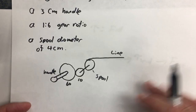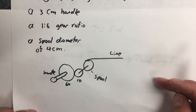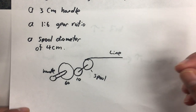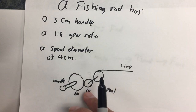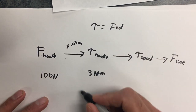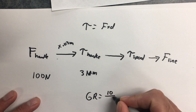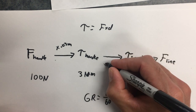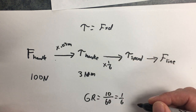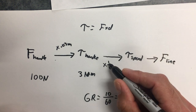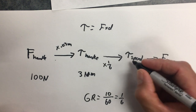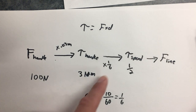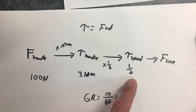Now, how much torque will that put on the spool? A fishing rod is set up so the spool rotates faster than the handle, because you want to wind the line in quickly — but that comes at a cost of reduced torque on the spool. When we have 10 teeth being driven and 60 teeth doing the driving, our gear ratio is 10 over 60, which is 1 over 6. So we multiply the handle torque of 3 newton meters by 1 over 6, giving us half a newton meter of torque on the spool.